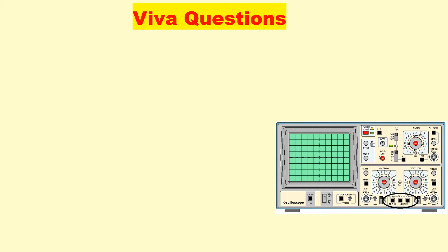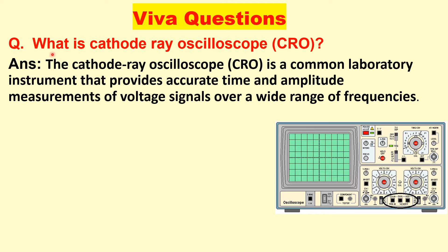So now we will discuss some important viva questions related to CRO. First question is what is cathode ray oscilloscope? So CRO is a common laboratory instrument that provides accurate time and amplitude measurement of voltage signals over a wide range of frequencies.